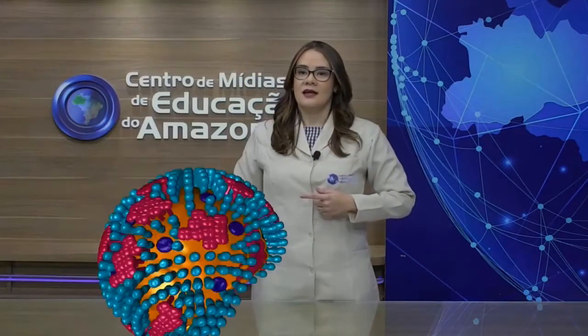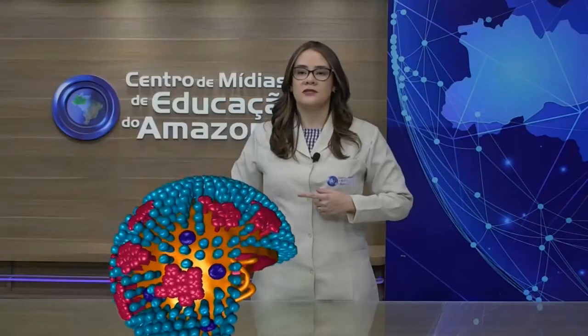Vamos apresentar a estrutura de um vírus. Nem todos os vírus apresentam a mesma estrutura. Esse vírus, por exemplo, tem uma membrana, um envoltório. Esse envoltório tem pontos azuis chamados de glicoproteínas, que são importantes para eles se conectarem nas células. Dentro desse envoltório, na parte laranja, nós temos o capsídeo, que é uma estrutura que todos os vírus têm.